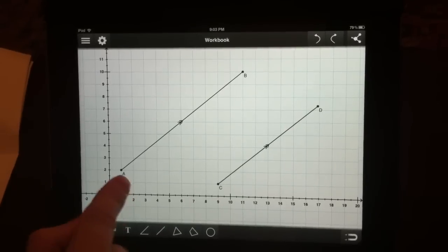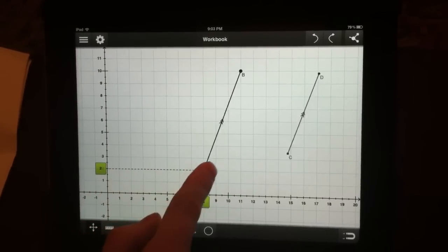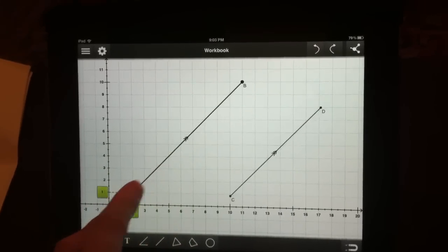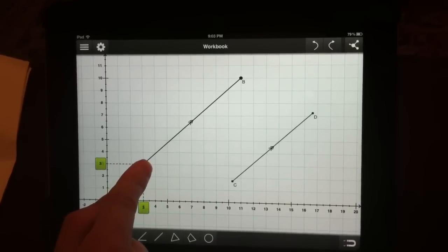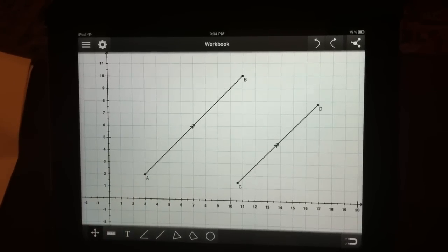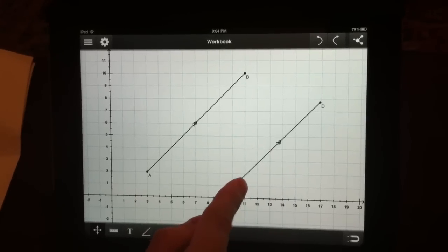Now if you move line AB, line CD stays parallel and it changes its size proportionally. You can break the connection if you move line CD away.